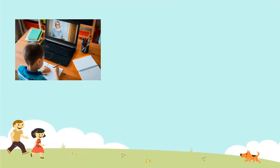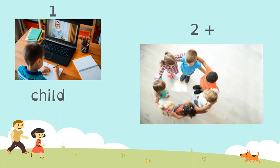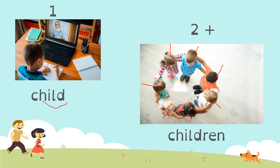Look at this. Here you say there is a child. One child — singular. And the plural is children. So let's count: one, two, three, four, five, six, and seven. We have a child or one child, and seven children.